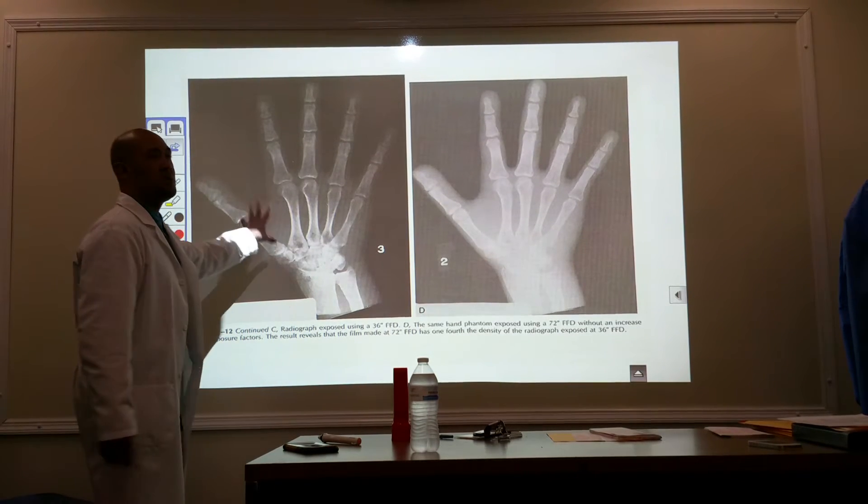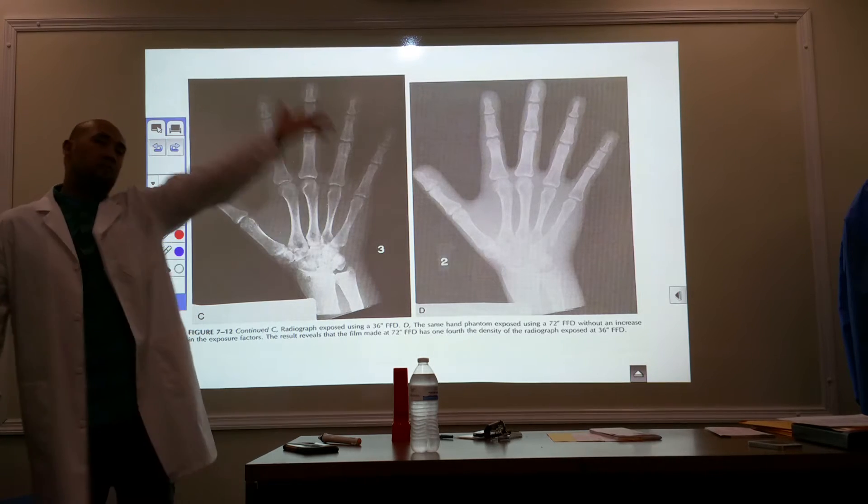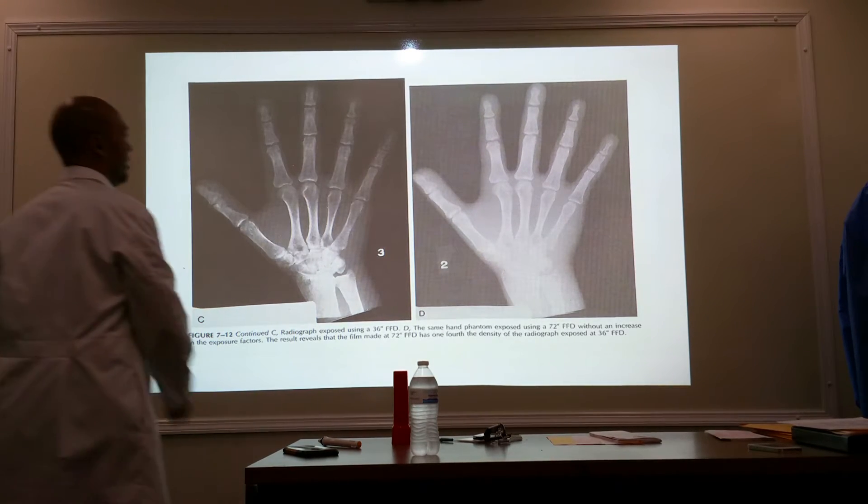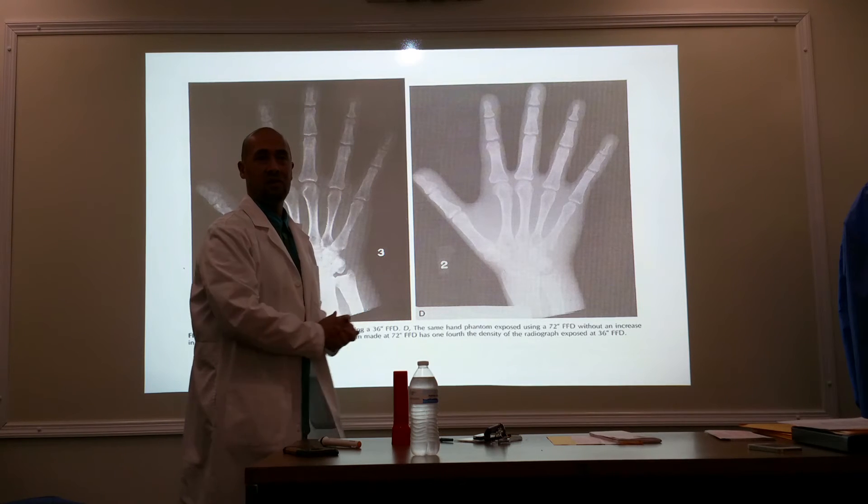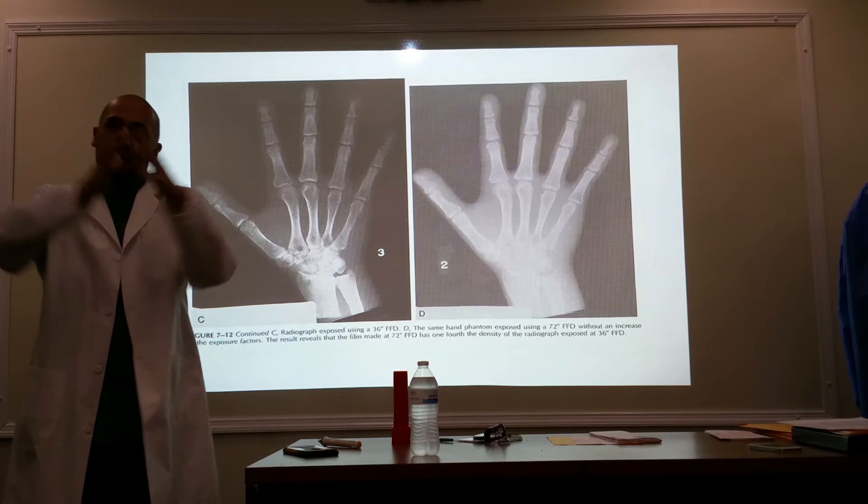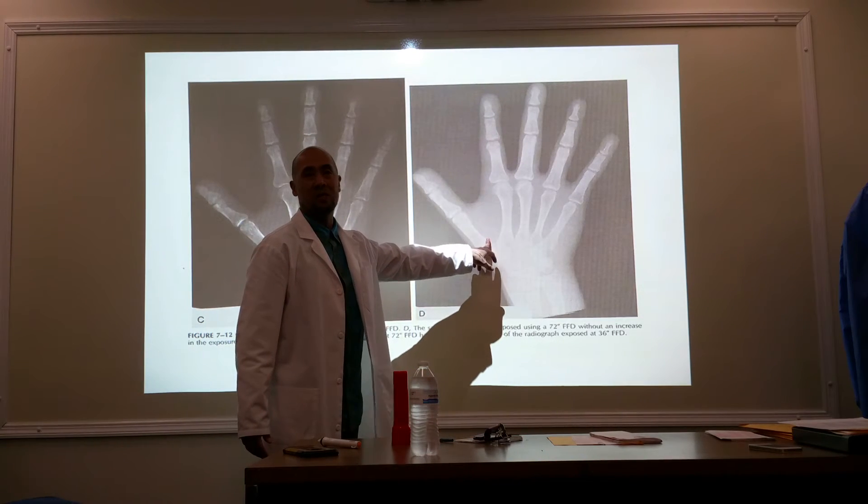So, here is an x-ray that was done at 40 inches. We did it at 80 inch SID, so we're double our distance. Because we double our distance, same amount of energy being spread out. It's not going to be as intense. This is going to be your resulting image.